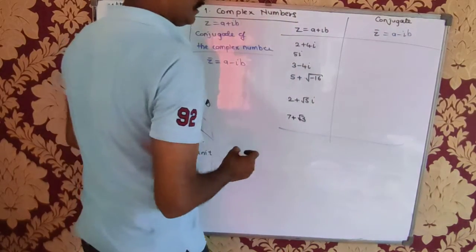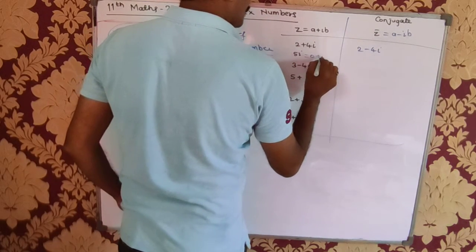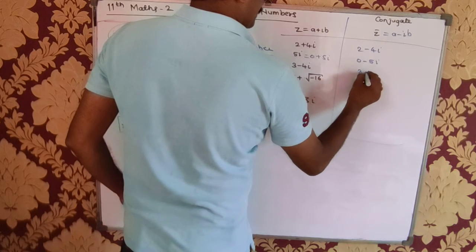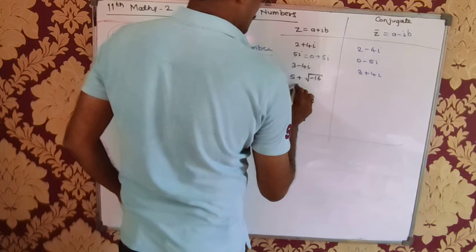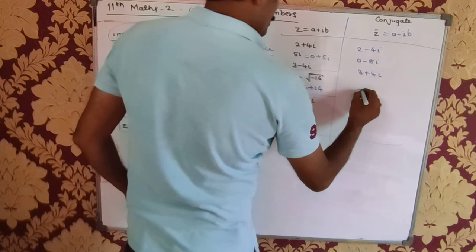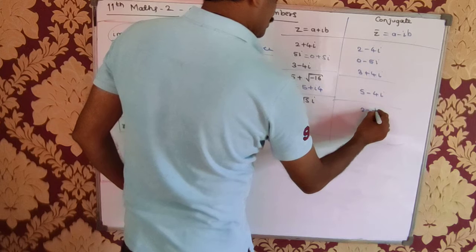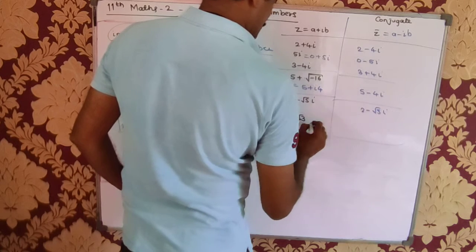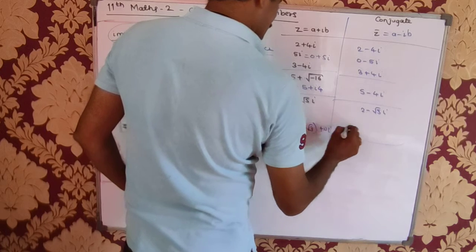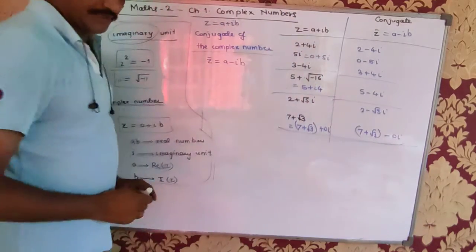For 2 + 4i, the conjugate is 2 − 4i. For 5 + 4i, the conjugate is 5 − 4i. For 2 + √5 · i, the conjugate is 2 − √5 · i. And for 7 + √3 + 0i, the conjugate is 7 + √3 − 0i. These are the conjugates.